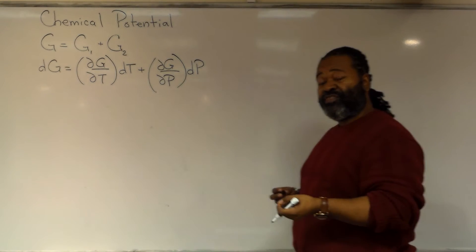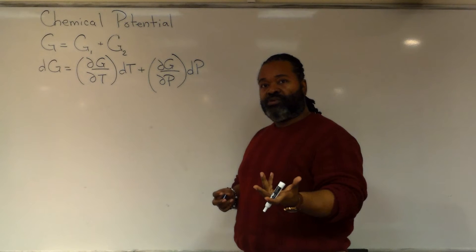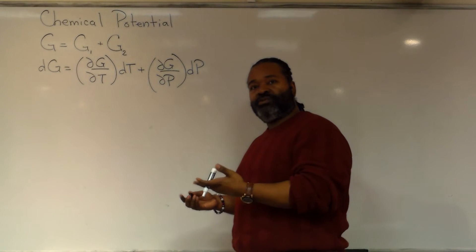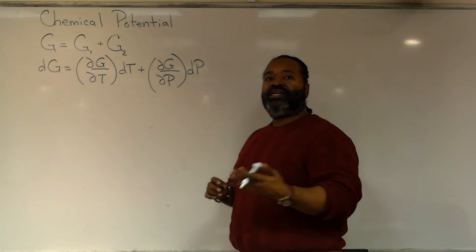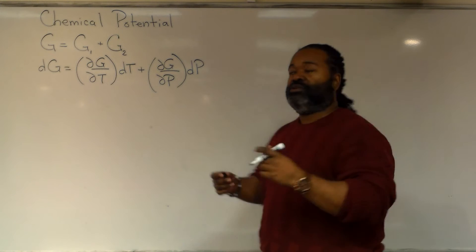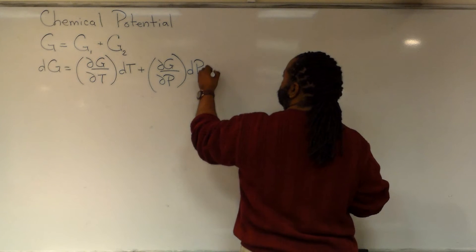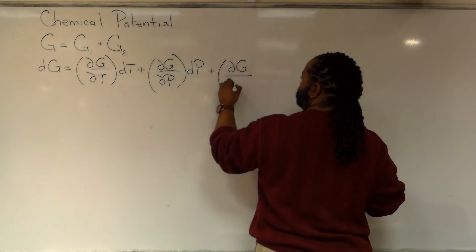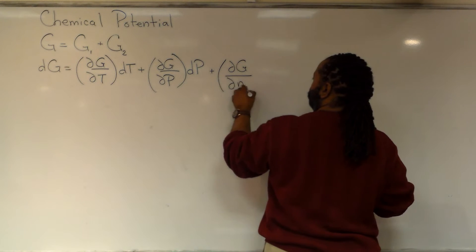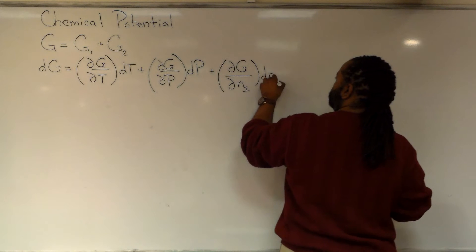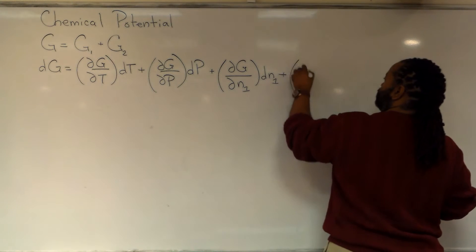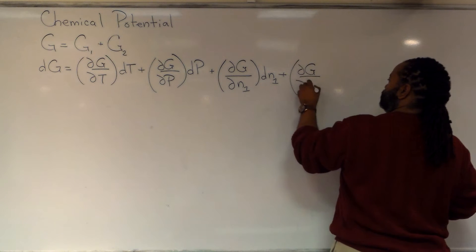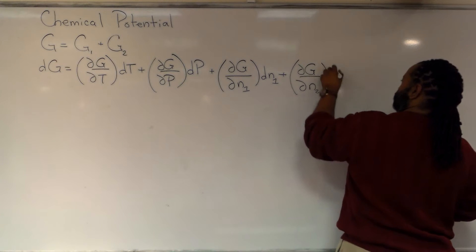But because we have two different phases, the number of things in phase one, those moles are also now a variable. And the number of things in phase two, those moles are also a variable. So we have two additional terms. We have the change in the Gibbs based on the change in phase one and a similar partial for the number of moles in phase two.